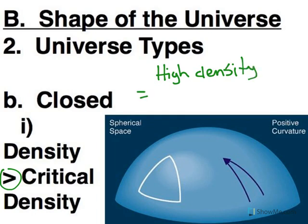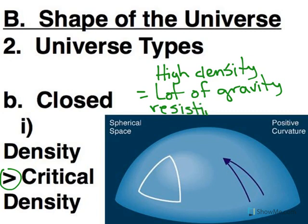So that means there's going to be a lot of gravity resisting expansion, and that high amount of gravity or mass is what actually curves the universe into this spherical shape. Because the more mass you have, the more it curves space around it. So this is a universe with enough mass to actually curve our entire universe into a spherical shape.